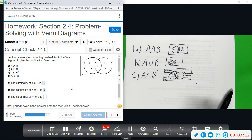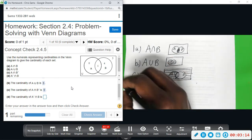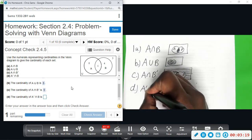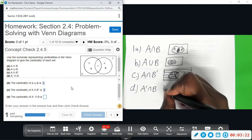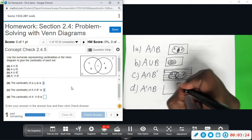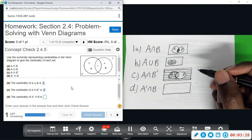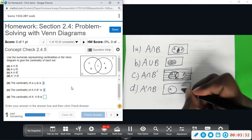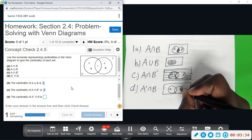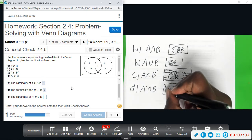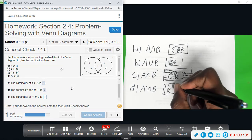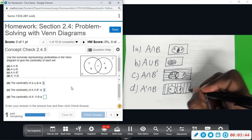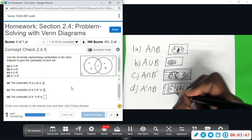Now we want to do A complement intersect B. Again, we're going to be doing double shading. A complement is going to be everything but A. So A complement, I'm going to do vertical—everything except for A. So this is A complement: everything in the box, nothing that is in A.